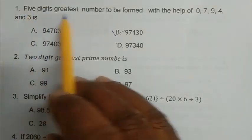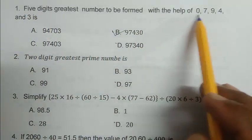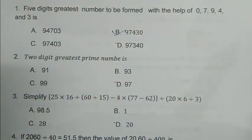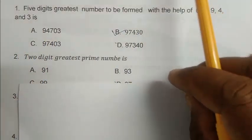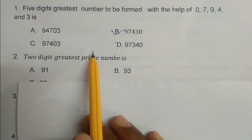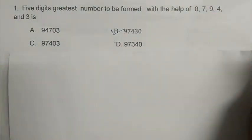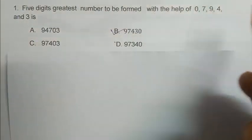Question number 1. 5 digit greatest number to be found with the help of 0, 7, 9, 4 and 3 is. We have to calculate the greatest number. So we have to write the number digit greatest from greatest to smallest.